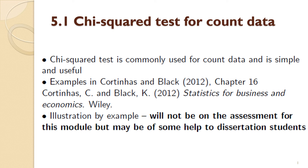Time for a different kind of chi-squared test. Rather than a one-sample variance ratio test, this is a chi-squared test for count data. This chi-squared test is commonly used for count data and is simple and useful, often applicable if you can express your data as a table of counts. There are some examples in this book by Cortinas and Black, chapter 16.